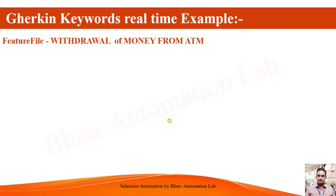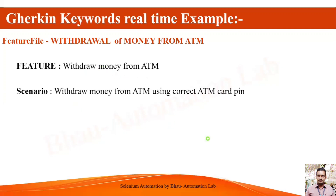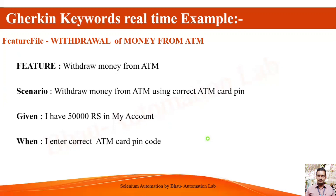Let's see an example of a feature file. For example, a feature file about withdrawal of money from an ATM would look like: 'Feature: Withdrawal of money from ATM', then 'Scenario: Withdrawal of money from ATM using correct ATM card PIN'. Then 'Given I have 50,000 rupees in my account', 'When I enter the correct ATM card PIN', 'Then I should be able to withdraw 2,000 from my account'. It's a plain English language feature about withdrawing money from the ATM.